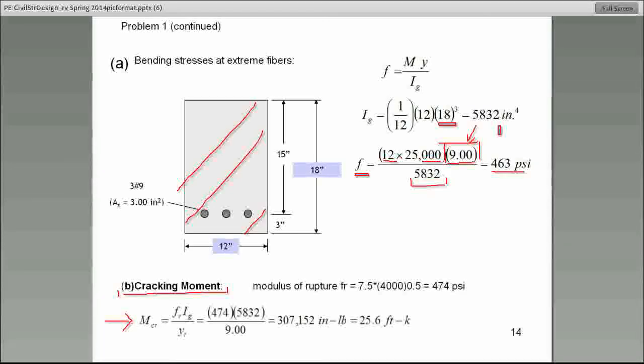So, we know I gross, we know YT, what we don't know is FR, and again, I will remind you, FR is the modulus of rupture, it is the stress that causes the first stress in the concrete beam. It's the stress that causes the first crack. The stress that causes the first crack in the concrete beam.